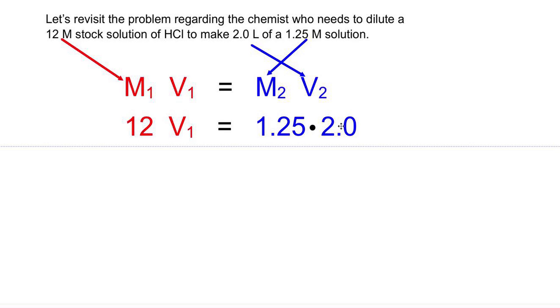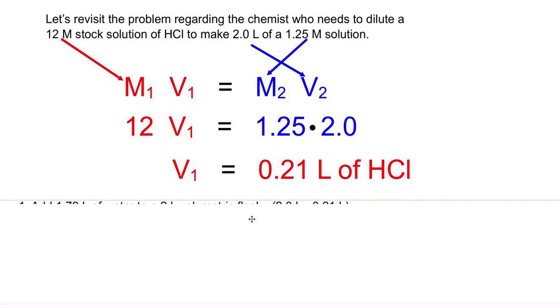We do know that our final volume is going to be 2 liters so we put that in the V₂ spot. And if you do the basic algebra, solve for V₁, you realize that we have 0.21 liters of hydrochloric acid that we need to dilute.